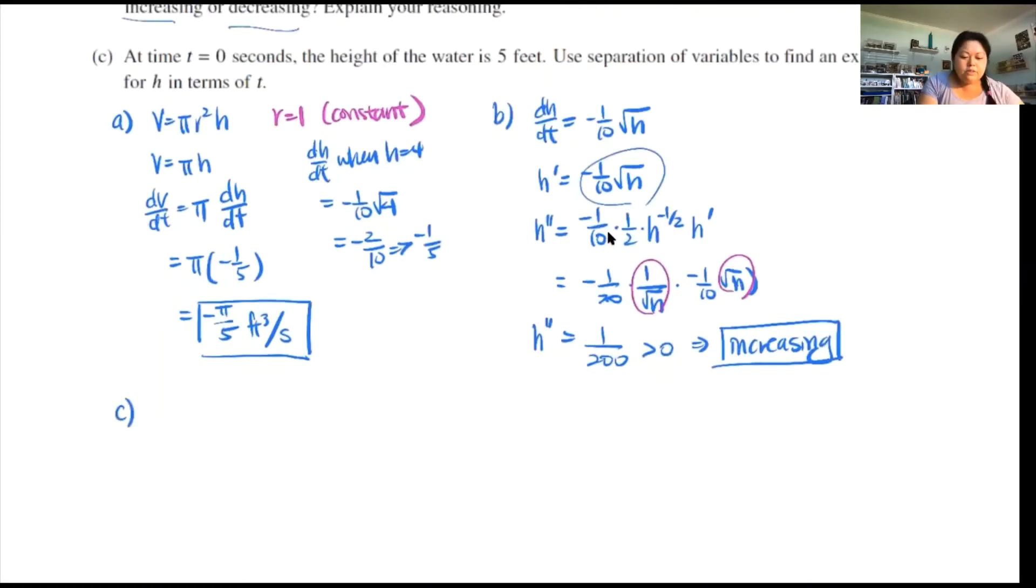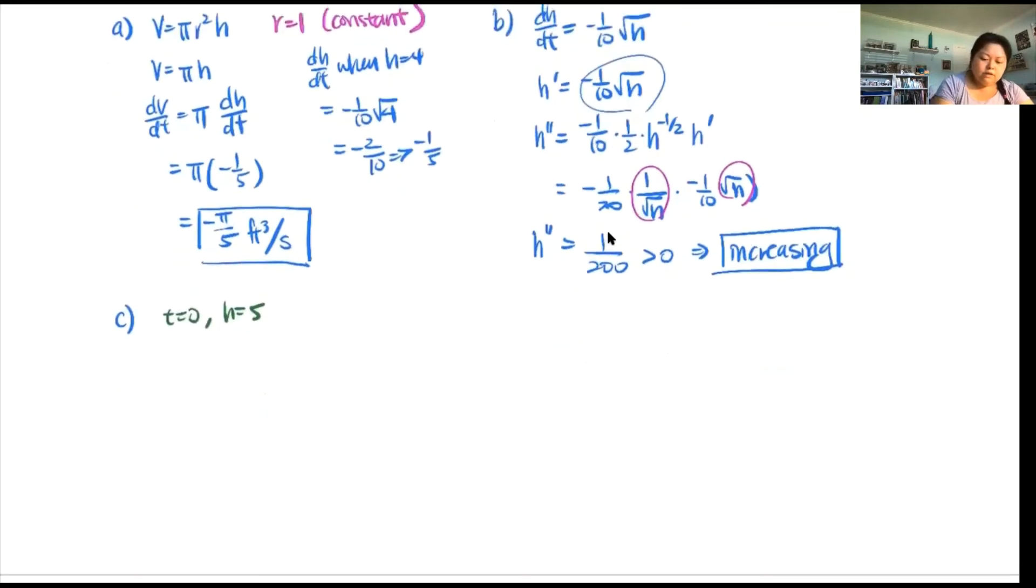Part C: At t equals zero seconds, the height of water is five feet. Use separation of variables to find an expression for h in terms of t. This initial condition of t equals zero, h equals five, is going to be handy in a minute. Let's look at our original function dh/dt equals negative 1 over 10 root h. Separation of variables: move the h to the left, move the dt over.